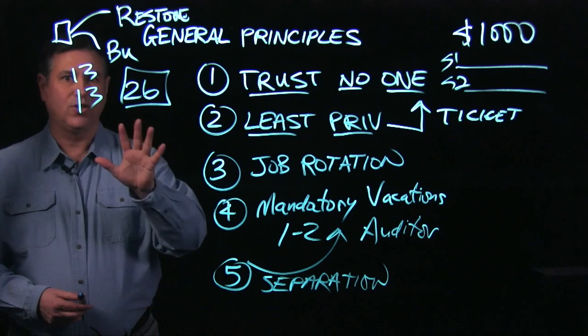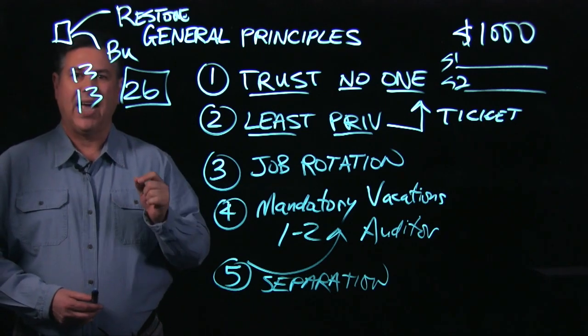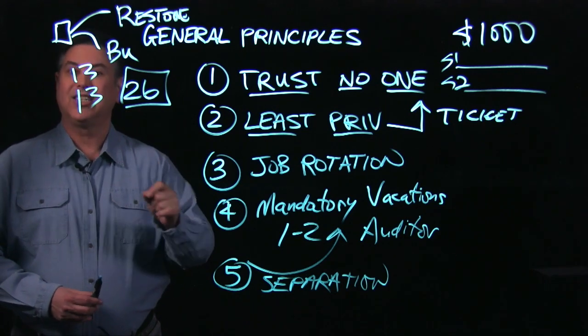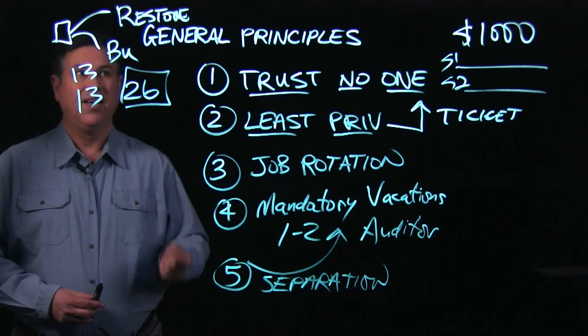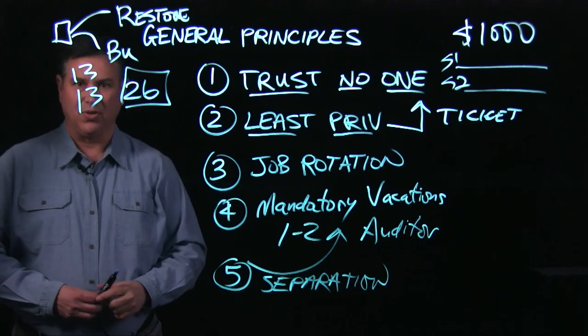So trust no one, least privilege principle, job rotation, mandatory vacation, and separation or segmentation of duties — that's the first five. Let's take a look now at principles six through ten.